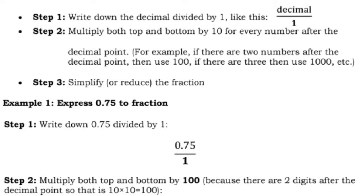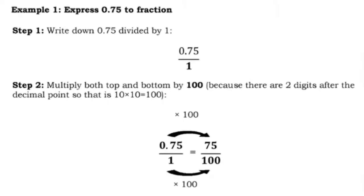Next is writing a decimal as a fraction. Step 1: write down the decimal divided by 1. Step 2: multiply both top and bottom by 10 for every number after the decimal point — for example, if there are two numbers after the decimal point, use 100; if there are three, use 1000, and so on. Step 3: simplify or reduce the fraction.